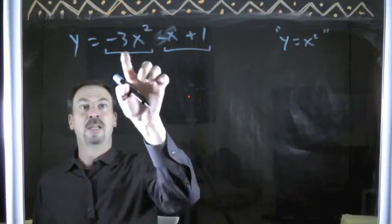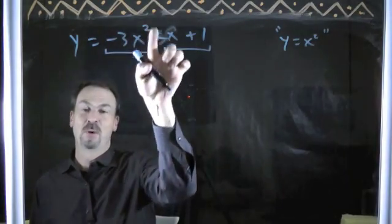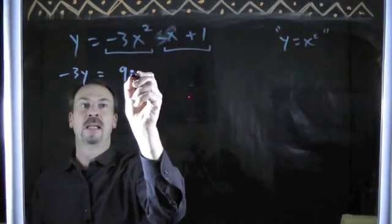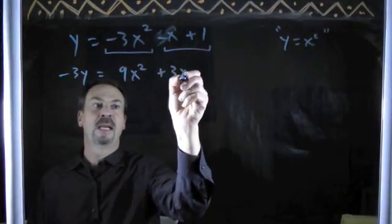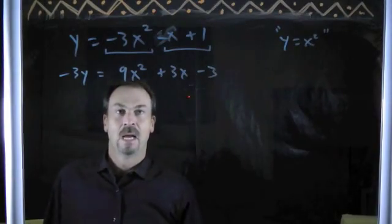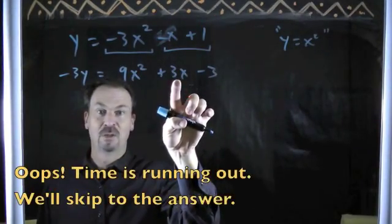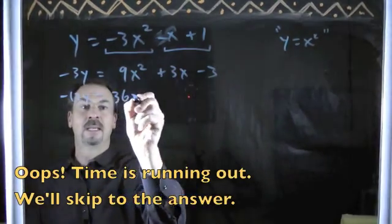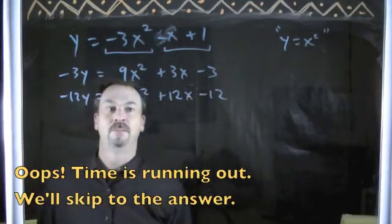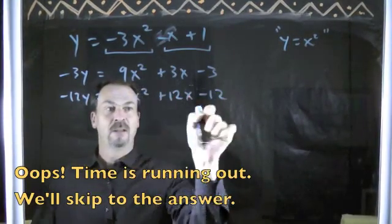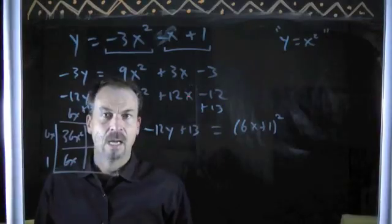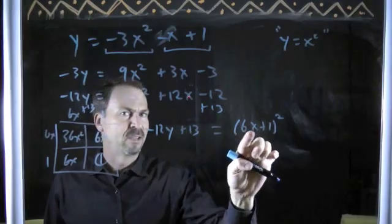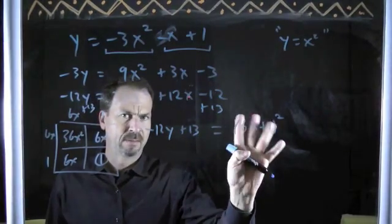I don't like negative 3x squared. I want that to be a perfect square. So let's multiply through by negative 3. So negative 3y equals what? 9x squared plus 3x minus 3. I'm a little worried about this odd number here in the middle. What we decide to do is multiply through by 4. Negative 12y is 36x squared plus 12x minus 12. Let's do the box method and what we've got for the quadratic part.